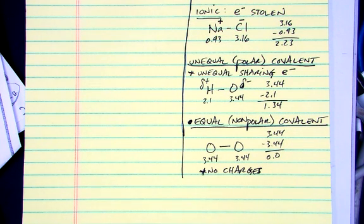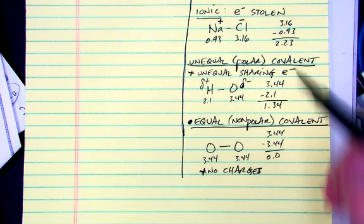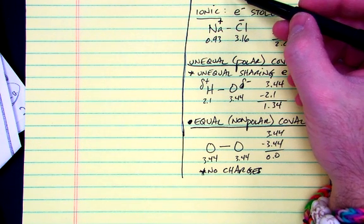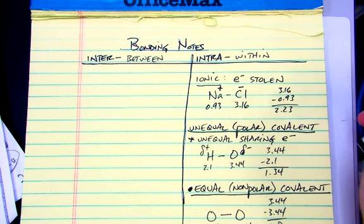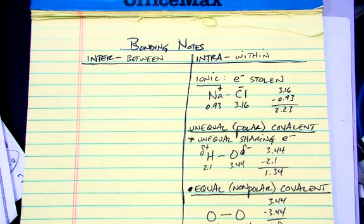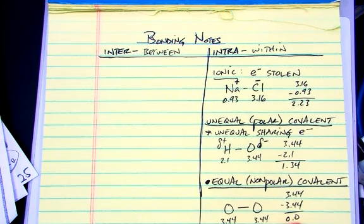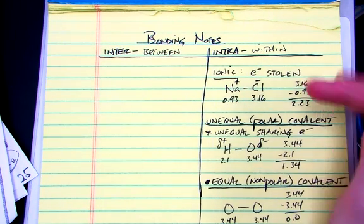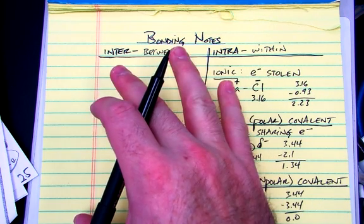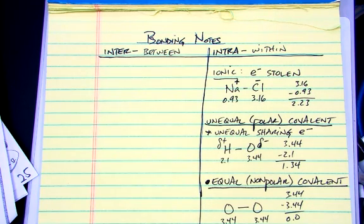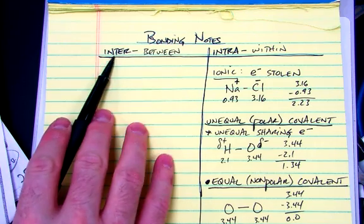So those are our three types of intramolecular bonds. An easy way to distinguish this is just to remember, your intramolecular bonds, these are going to be the ones that are on that periodic table of electronegativities. Now, once we know what the bonds are like within molecules, we can look at the molecules once you have more than one molecule, the intermolecular bonds.